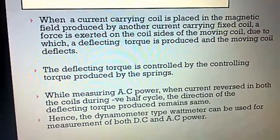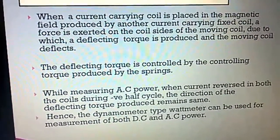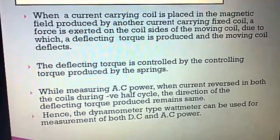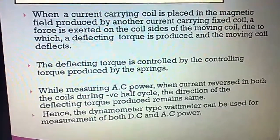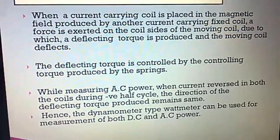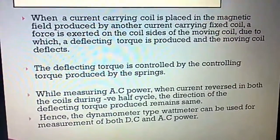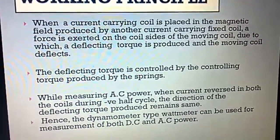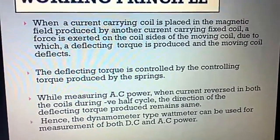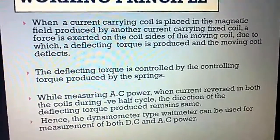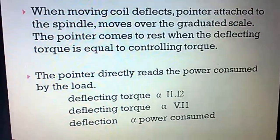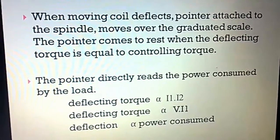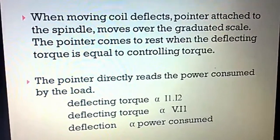Working principle: When a current-carrying coil is placed in the magnetic field produced by another current-carrying fixed coil, a force is exerted on the sides of the moving coil, due to which the deflecting torque is produced and the moving coil deflects. The deflecting torque is controlled by the controlling torque produced by the springs. When measuring AC power, when the current reverses in both coils during the negative half cycle, the direction of the deflecting torque remains the same. Hence, the dynamometer type wattmeter can be used for measurement of both DC and AC power. As the moving coil deflects, the pointer attached to the spindle moves over the graduated scale, coming to rest when the deflecting torque equals the controlling torque.